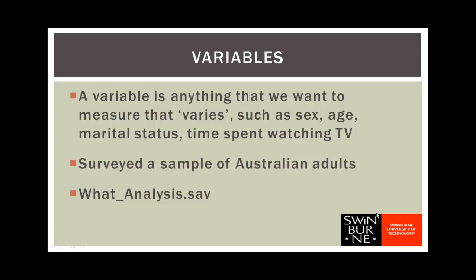Now let's look at one more definition: a variable. A variable is anything that we want to measure that varies. For example, if we surveyed a sample of Australian adults, we might collect information about their age, sex, marital status, or the amount of time they spent watching TV — all of these vary from one person to another. When thinking about whether something's a variable, think about it in terms of a question. Age is a variable because you can ask someone 'What is your age?' — the question makes sense and different people give different answers.